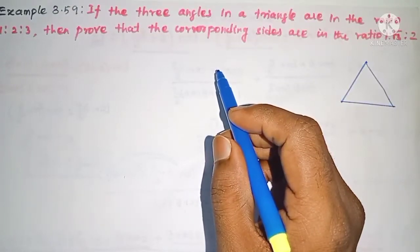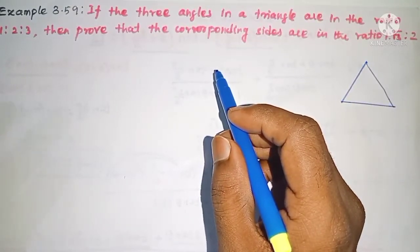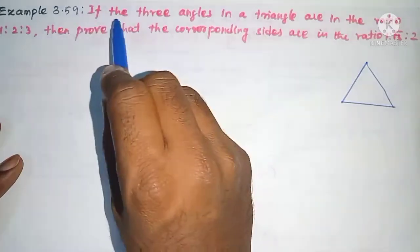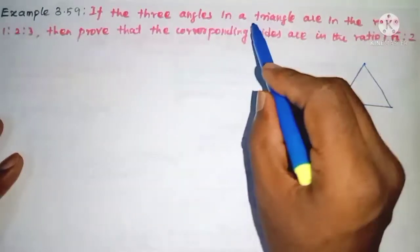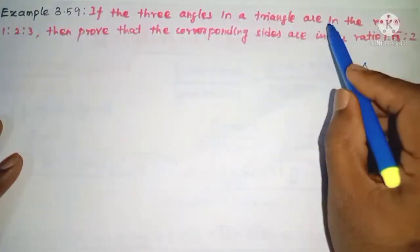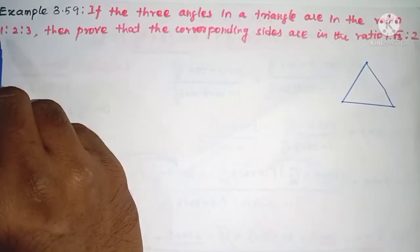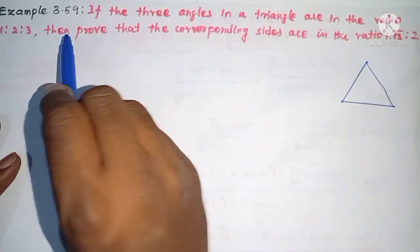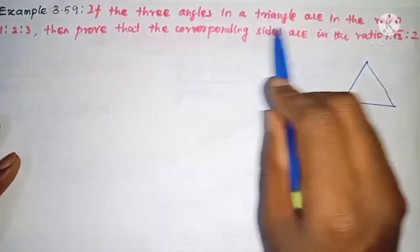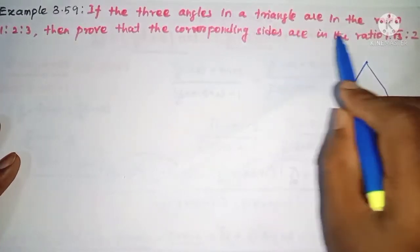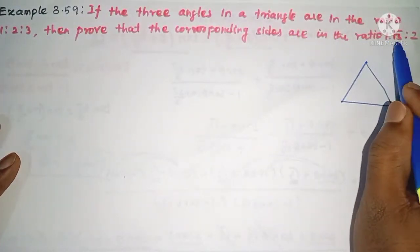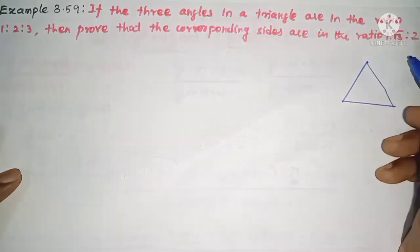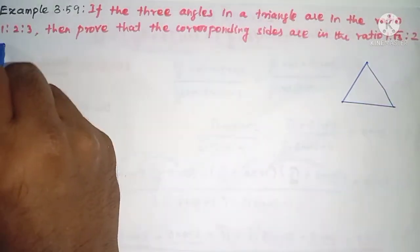Hi student, this is Silamo Max Tuition 11th Standard Example 3.59. If the 3 angles in a triangle are in the ratio 1:2:3, then prove that the corresponding sides are in the ratio 1:√3:2.